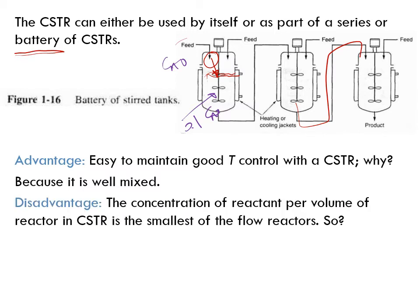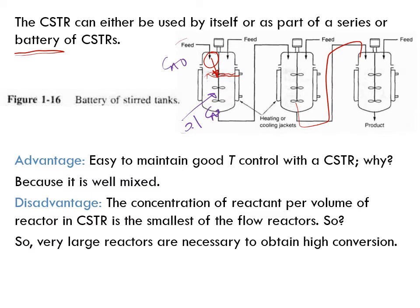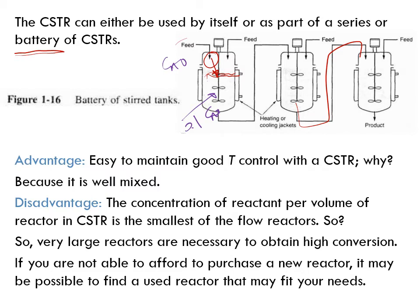A disadvantage: the concentration of reactant per volume of reactor in a CSTR is the smallest of the flow reactors. Low concentration means low rate of reaction, which means you'll need a large reactor to achieve a desired conversion. Therefore, very large reactors are necessary to obtain high conversion.